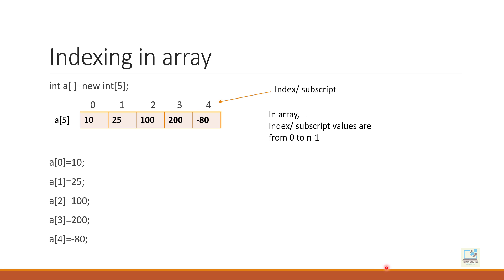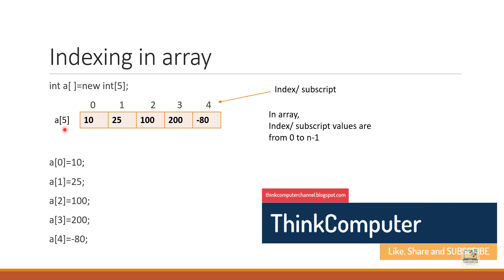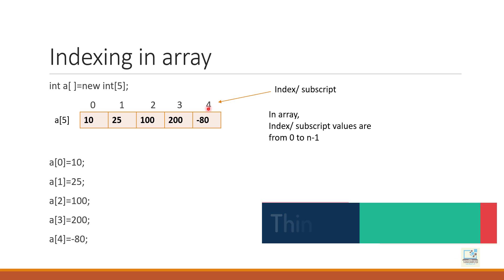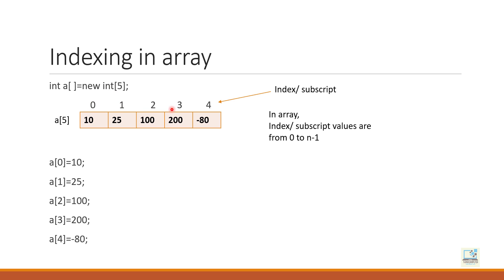Next is indexing in array. Values are stored in continuous memory blocks, so how does the computer know which box to store a value in or which position to access? It's done using the index or subscript. When you create an array — say, int a[] = new int[5] — the computer will create indexes, and indexes always begin with 0. For any type of array, the index always begins with 0 and goes up to n minus 1. If the size is 5, indexes are 0, 1, 2, 3, 4. If the size is 10, indexes are 0 through 9.